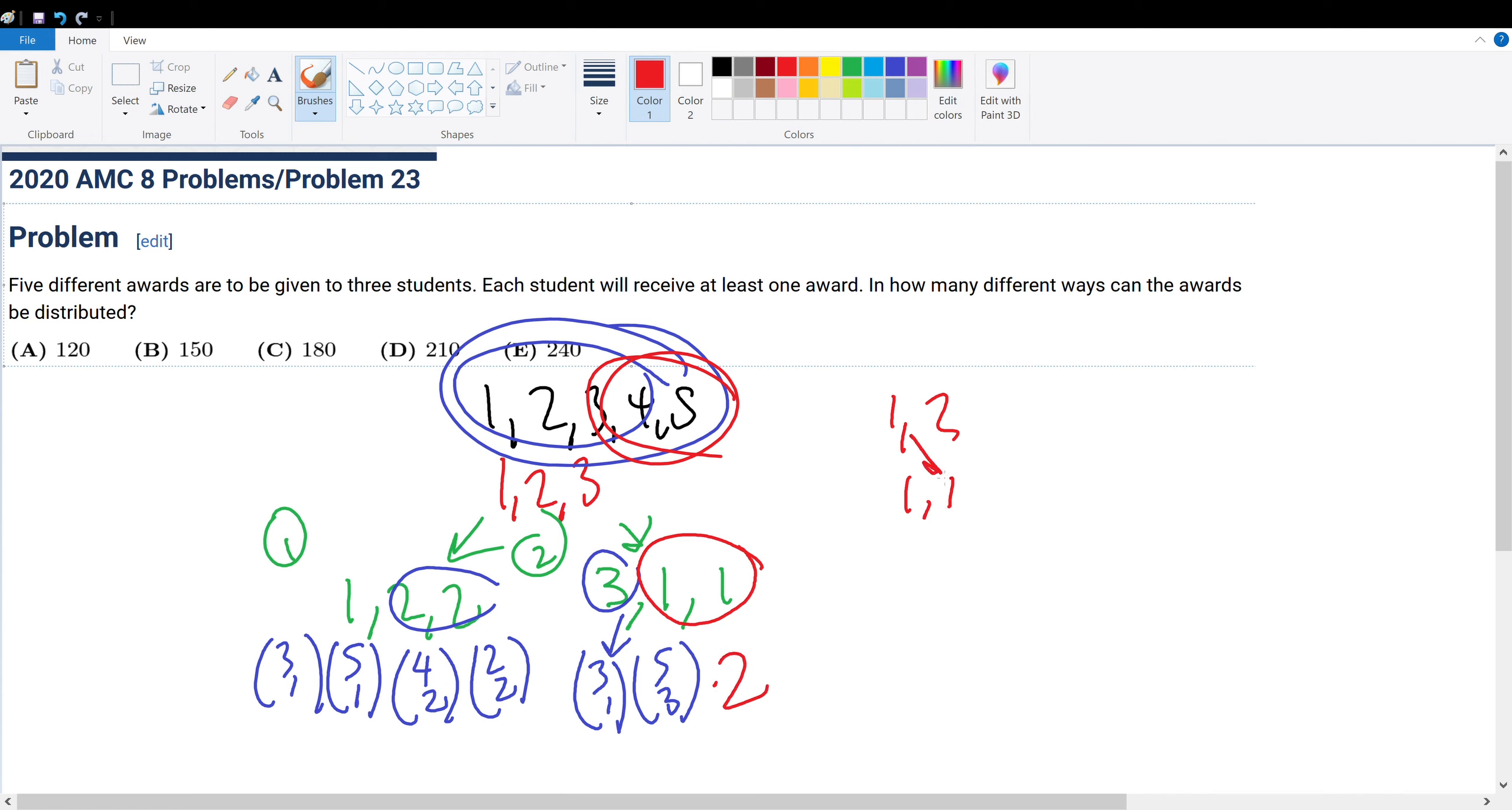We could give it like this, or we could give it like that. So there's two different ways. Now let's figure out what this is.